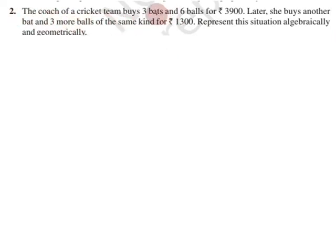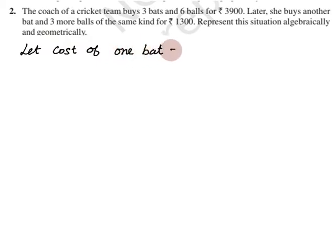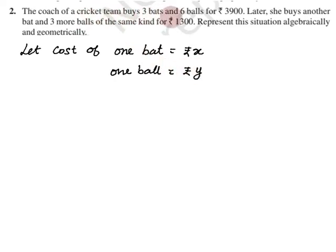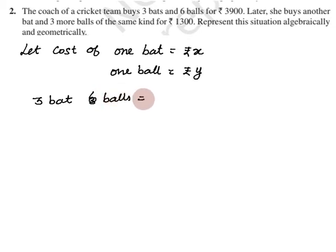Two things are coming: one bat and one ball. So let's define our variables. The cost of 1 bat is x rupees, and the cost of 1 ball is y rupees. The first condition: 3 bats and 6 balls cost 3,900 rupees.